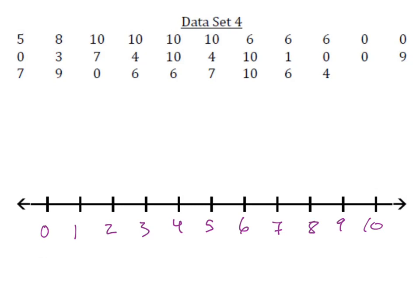And to make a dot plot, what you're going to do is you're going to figure out how many zeros are in your data set. And then here, you're going to put stack up dots accordingly how many zeros are in your data set. You can also put x's, you can put squares, you can put triangles, you can put whatever you want. But let's go ahead and count.